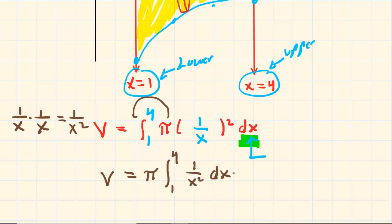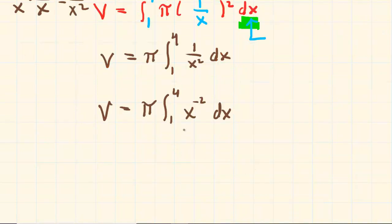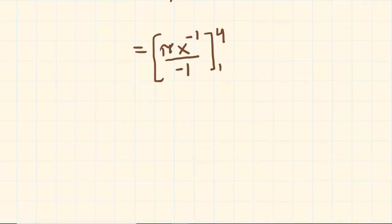To integrate this, we want to bring the x squared to the numerator. When you bring it to the numerator, you're going to end up with x to the negative two. When you actually integrate x to the negative two, you have to add one to the exponent, so this is going to become pi x to the negative one. And then you have to make sure that you divide by the new exponent, so you'll divide by negative one. And then we're going to evaluate this from one to four.